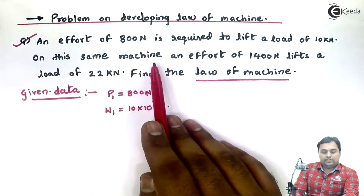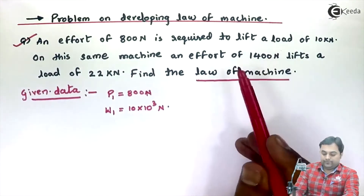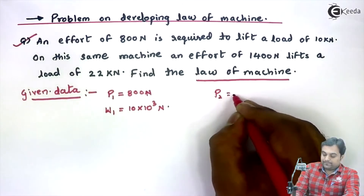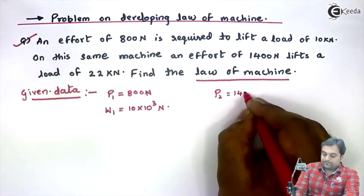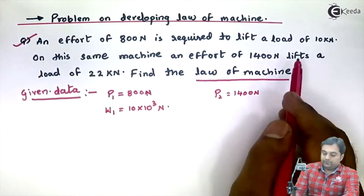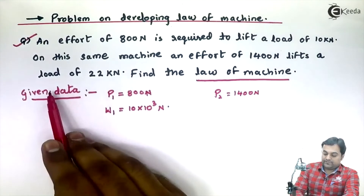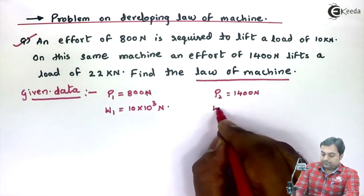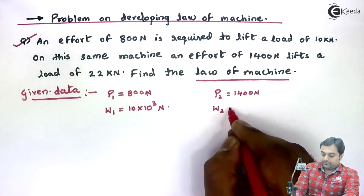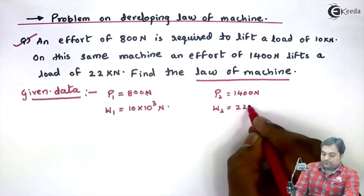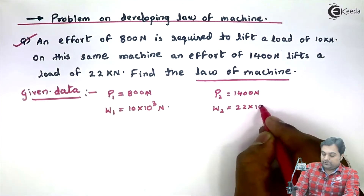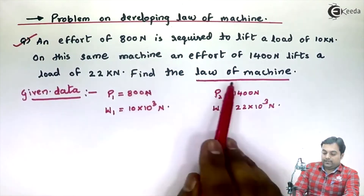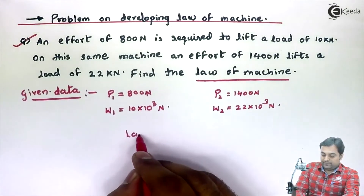On this same machine, an effort of 1400 Newton — the second value of effort — lifts a load of 22 kilonewton, so W2 is 22 into 10 raised to 3 Newton. We have to determine the law of machine.